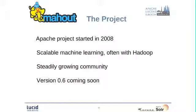So the project itself, it started in 2008. The goal is to create all kinds of scalable machine learning algorithms. A lot of them run on Hadoop, though not all. And the community is growing steadily. More people on the mailing list, more activity. And now it's version 0.5 and version 0.6 probably at the end of the year, maybe.